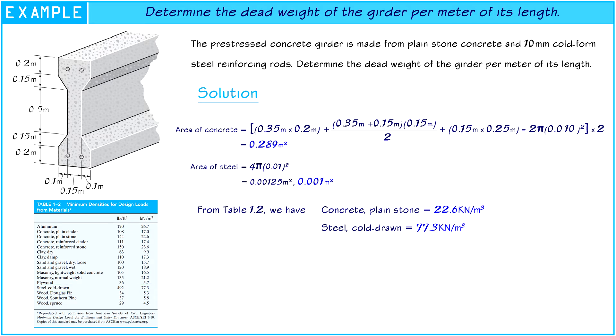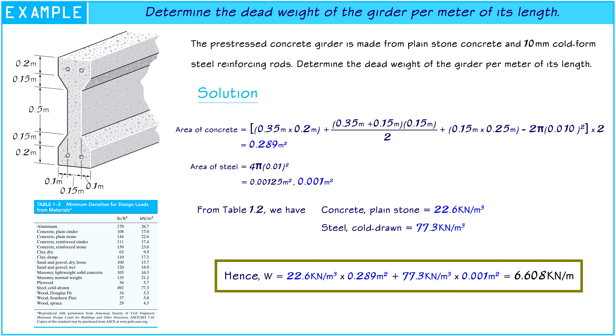Now we are on the last step of this problem. Hence, the dead weight of the prestressed concrete girder is 6.608 kN per meter.